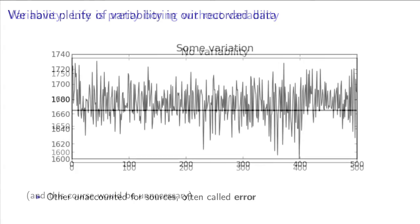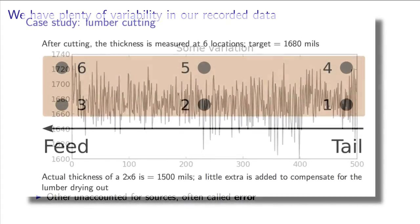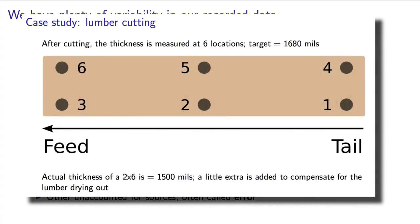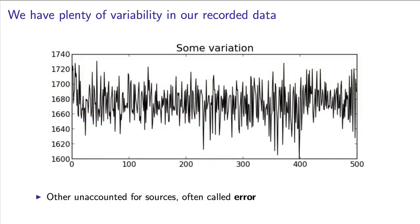Your job as an engineer mostly exists because there is variation. For example, take the objective of producing wooden boards that we saw in the previous video on box plots. The boards need to be of the same thickness of 1680 every time. That never happens in practice. Each board is slightly different — they have variation. In the module on process monitoring that we will get to, we will be able to prove this numerically. But for now, this plot shows that the data are actually good; they are from normal operating conditions. It's not a flat line — there is variability.